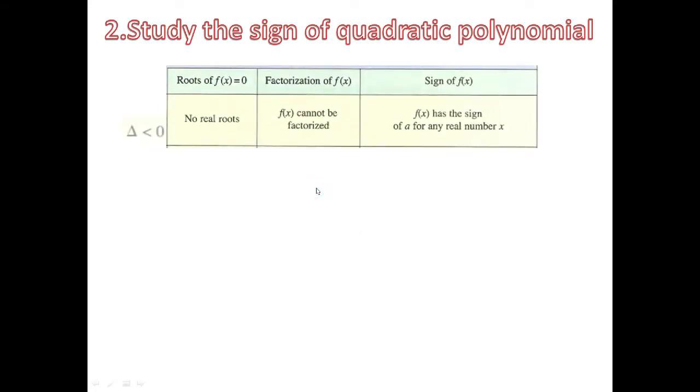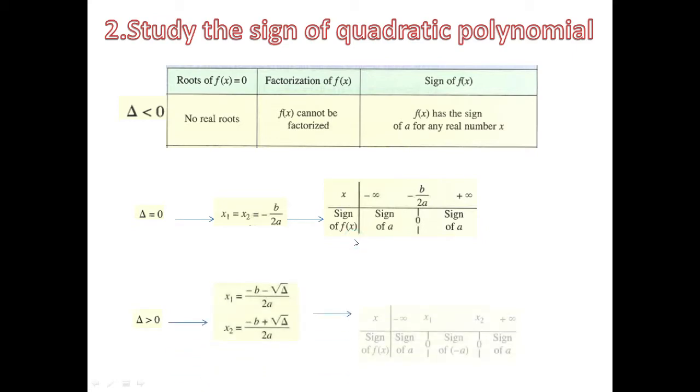Study the sign of quadratic polynomial: if Delta is negative, the sign of F and the sign of A are the same. If Delta equals zero, we write table of variation like this and write sign of A positive or negative. If Delta is positive, we draw table of variation like that. If A is positive we write positive, positive, negative in the middle.